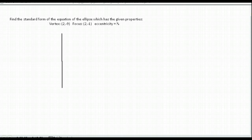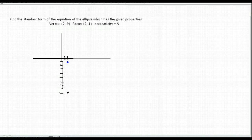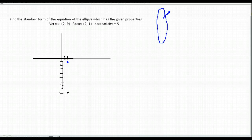For this problem we are given a vertex at (2, −9), a focus point at (2, −1), and an eccentricity of 1/3. The way the vertex and focus point are lined up, we can tell we have a vertical ellipse.